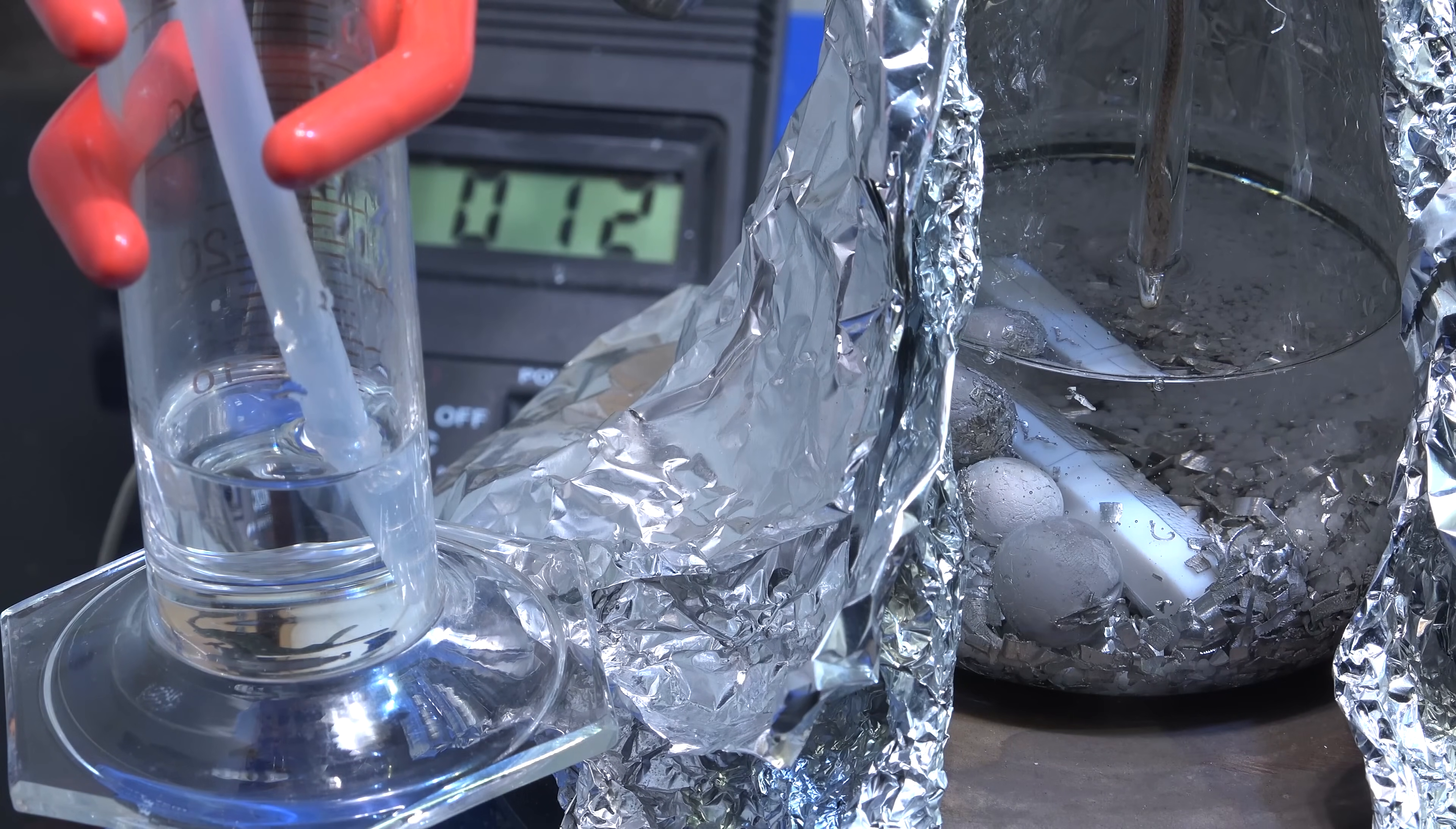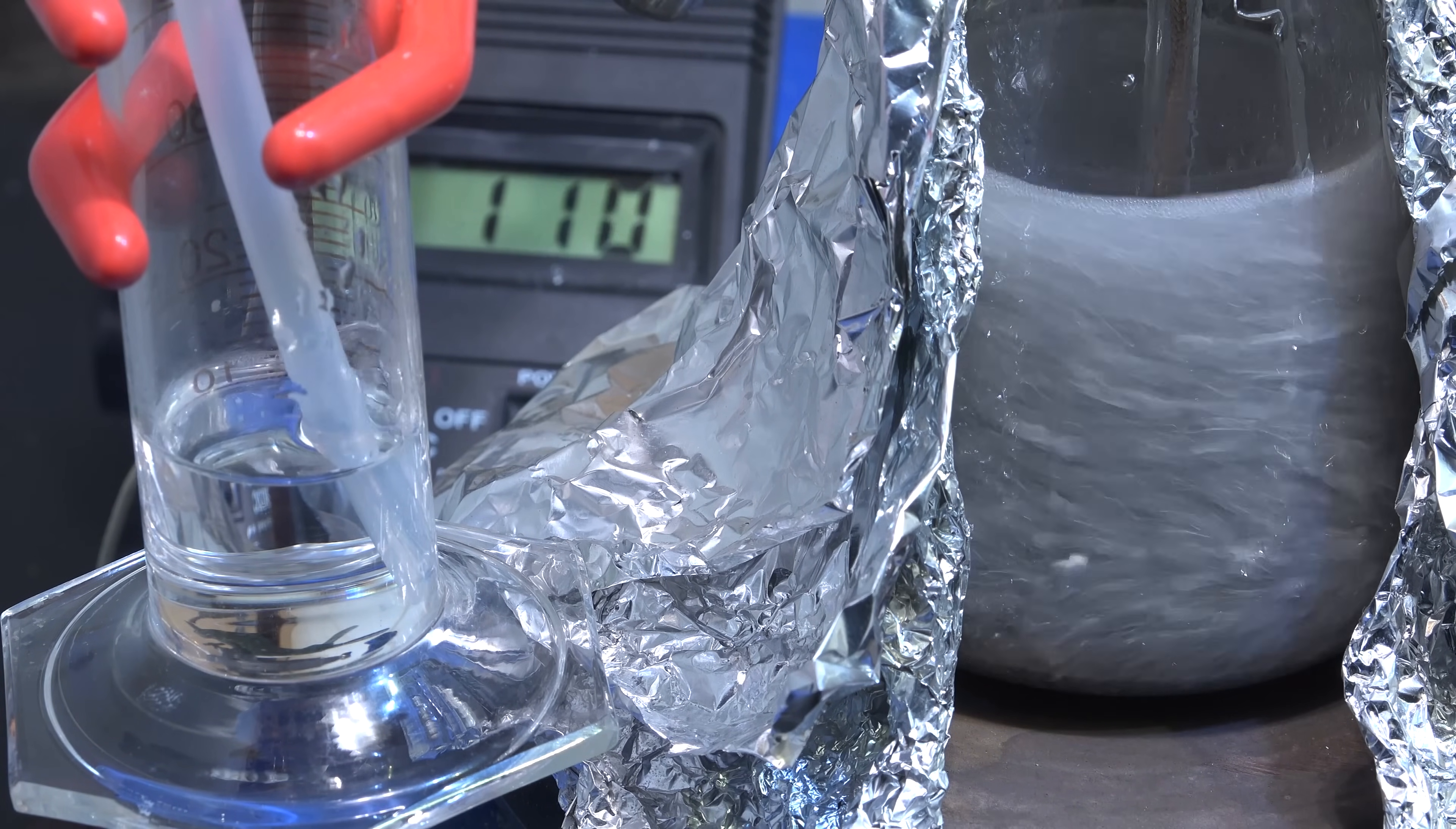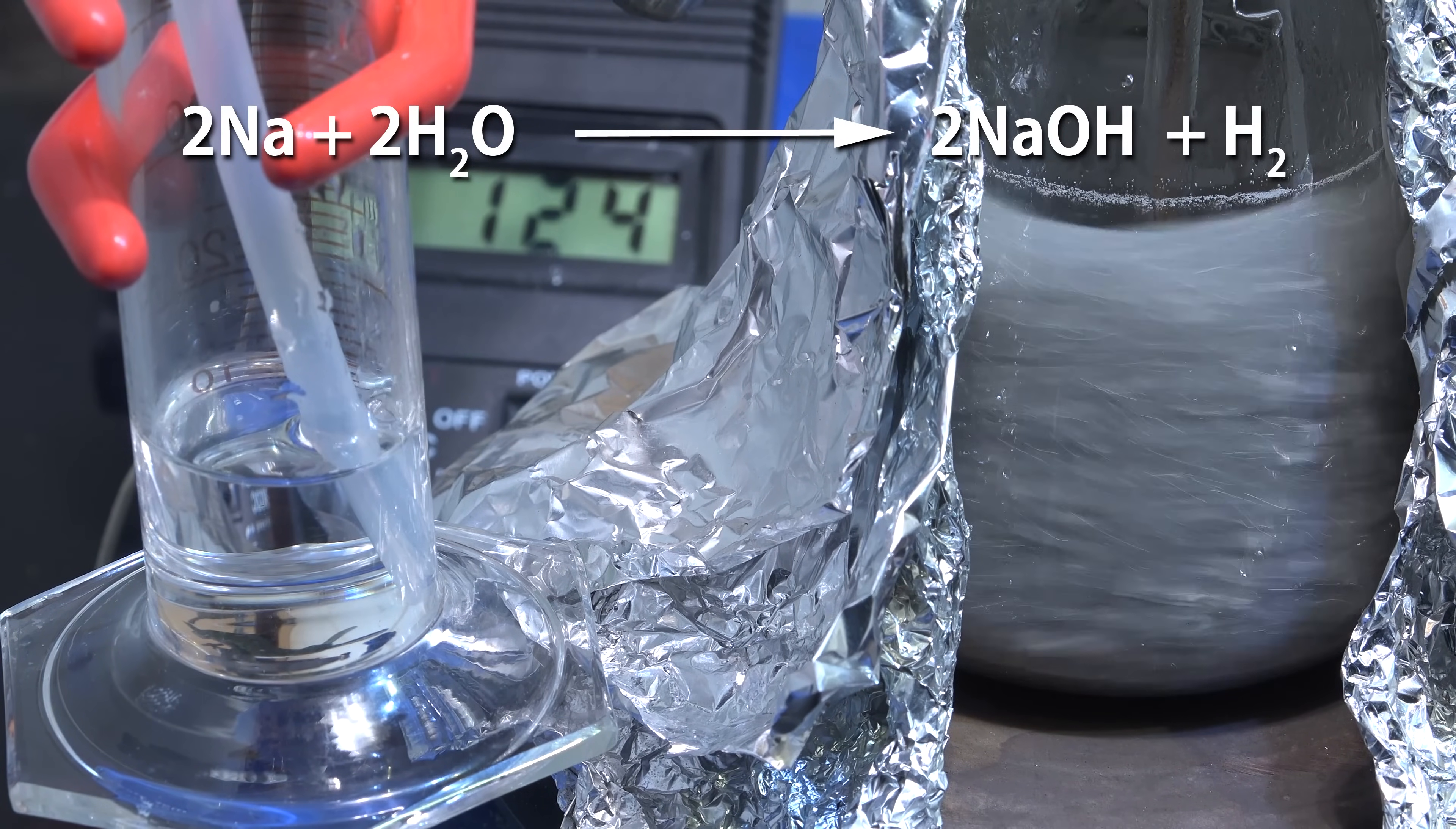When you're ready, turn on stirring and heating and raise the internal temperature to between 120 and 130 degrees celsius. Adjust stirring so that all these solids are suspended. We don't want any hot spots forming from solid material insulating the glass from solution. What we're doing is reacting the sodium or lithium starter metal with any moisture present to dry out the mixture and generate hydrogen as a side product.